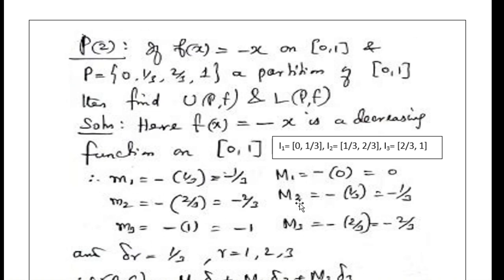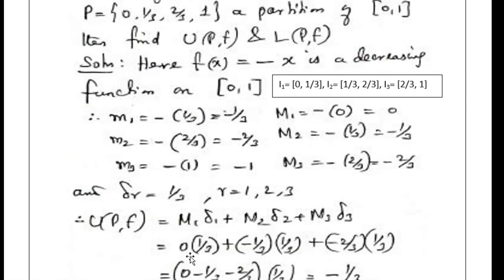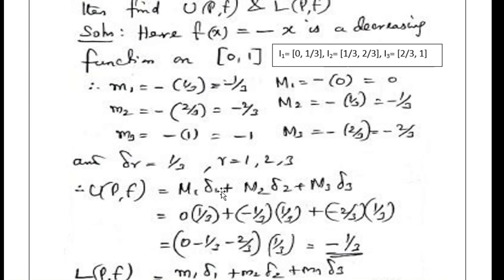Now let us find the upper Riemann sum. U(P, f) = M1·Δ1 + M2·Δ2 + M3·Δ3. Substituting: M1 = 0, M2 = -1/3, M3 = -2/3, and Δ1 = Δ2 = Δ3 = 1/3. Taking 1/3 as a common factor: (1/3)(0 + (-1/3) + (-2/3)) = (1/3)(-3/3) = (1/3)(-1) = -1/3. Therefore, the upper Riemann sum is -1/3.